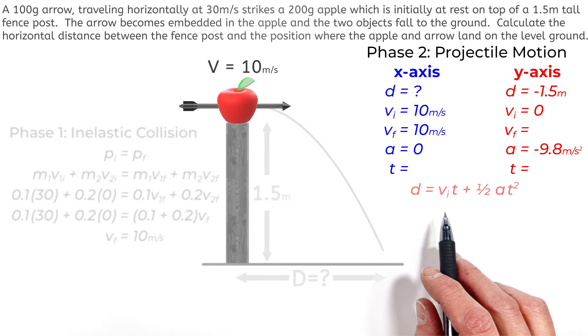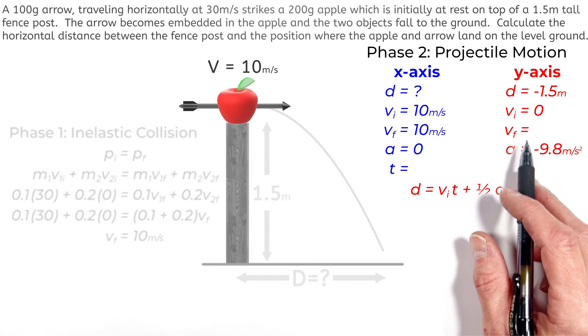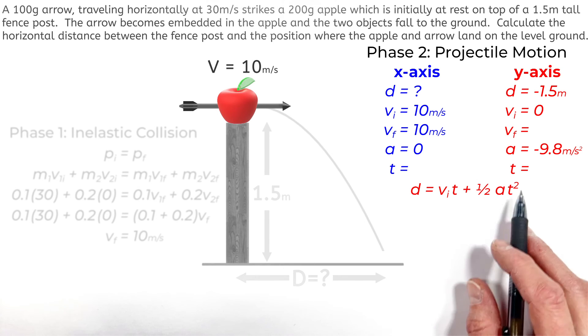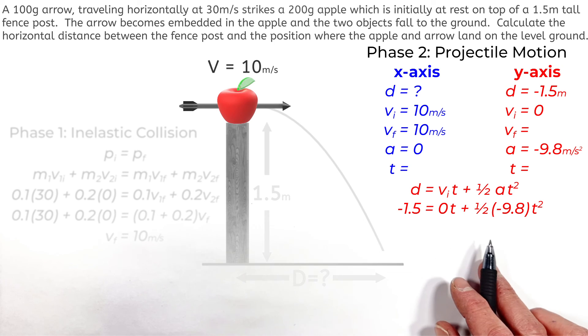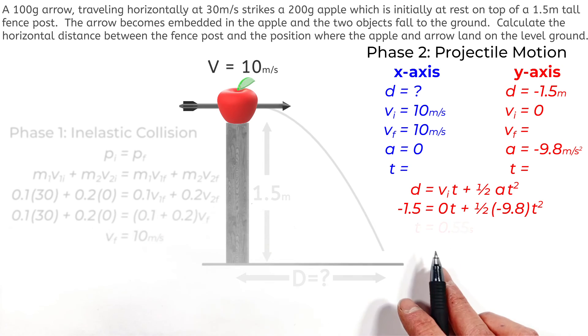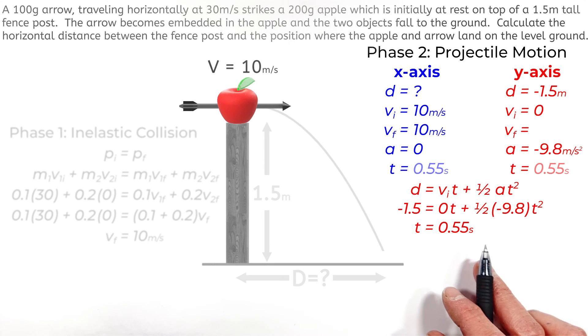So using the kinematic equation, d equals v_i times t plus one half a times t squared in the y-axis, plugging in negative 1.5 for the displacement, zero for the initial time, and negative 9.8 for the acceleration, we find the total time it's going to take this apple and arrow to strike the ground is going to be 0.55 seconds.